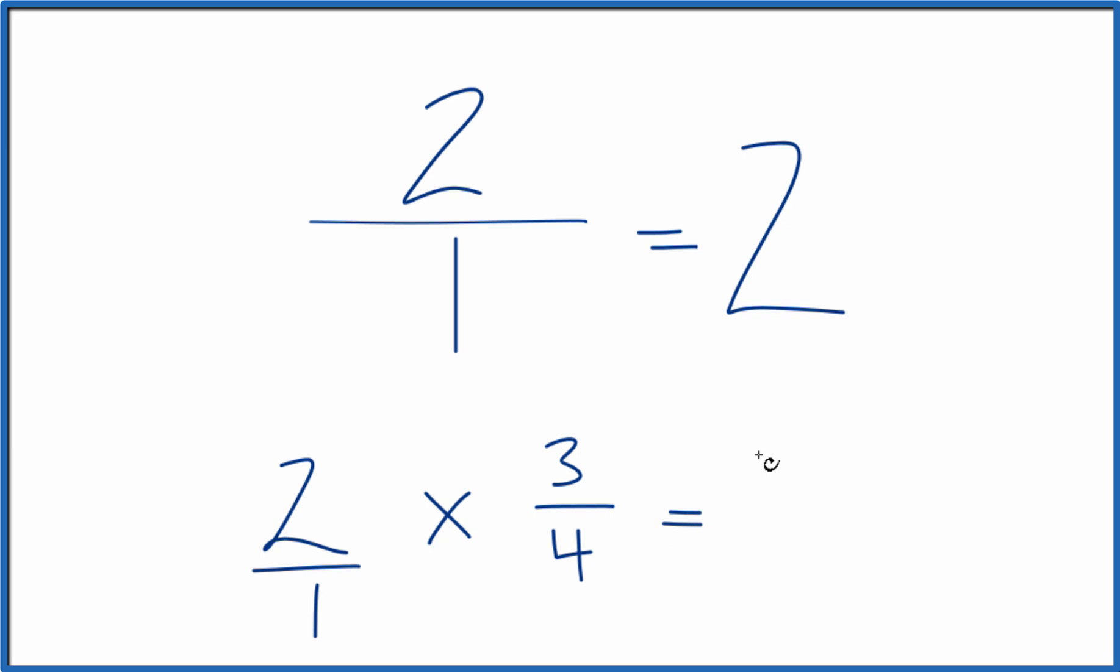You multiply 2 times 3, that gives you 6. 1 times 4 would give you 4. You can reduce it to 3 halves. But the point is, by considering this to be 2 over 1, that makes multiplication a lot easier in this sense.